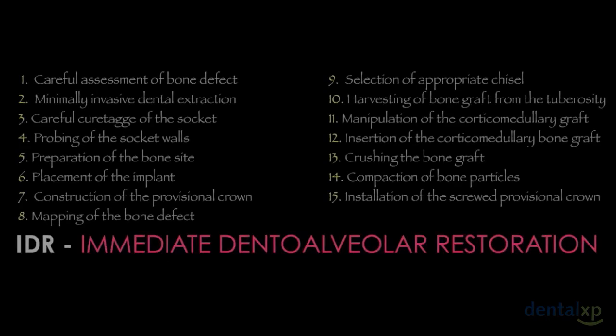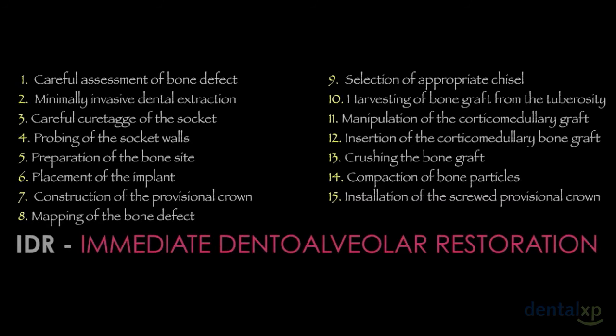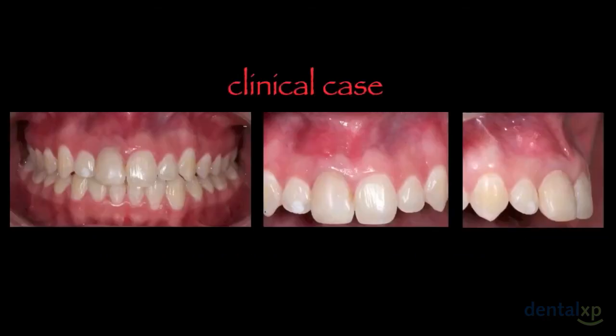I'll present the IDR protocol, which involves 15 steps, and I'll show you all of them. To explain better, I chose a special and very interesting clinical case. As you can see, the gingival architecture shows changes in the level of the gingival margin in the region of the two central incisors. This patient came to us because she had an accident, fractured the right central incisor, and lost all buccal bone wall.